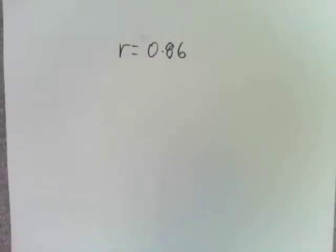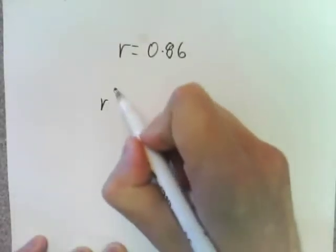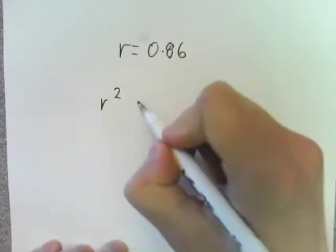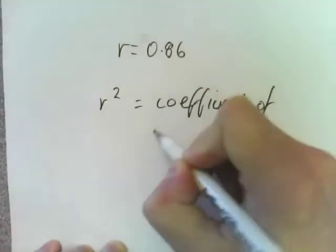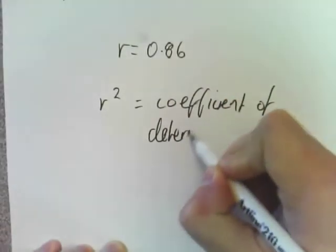From our last calculation, r is 0.86. There's just something else called r squared. That's the coefficient of determination.